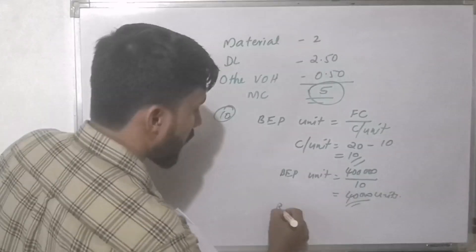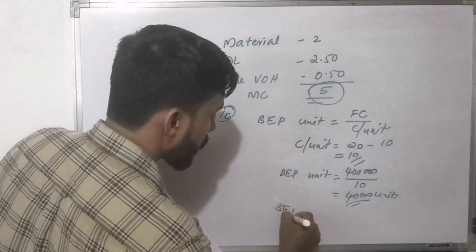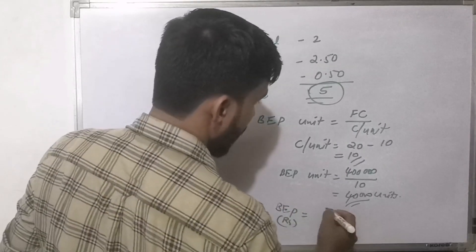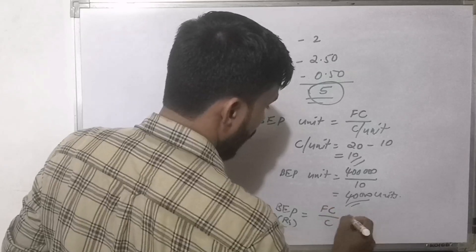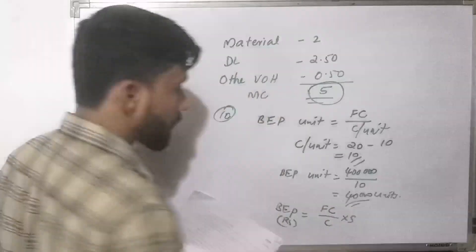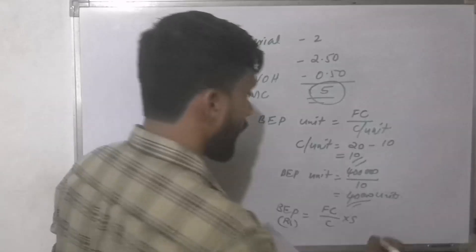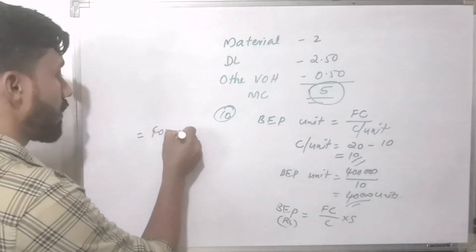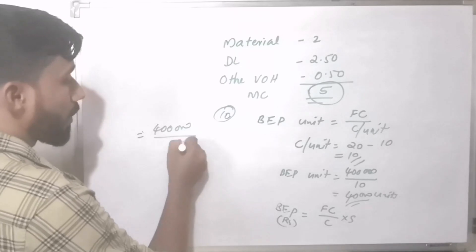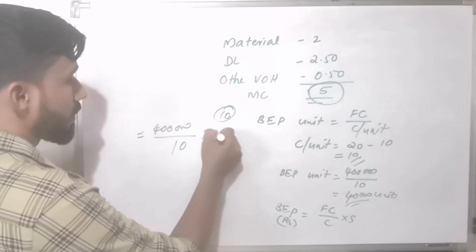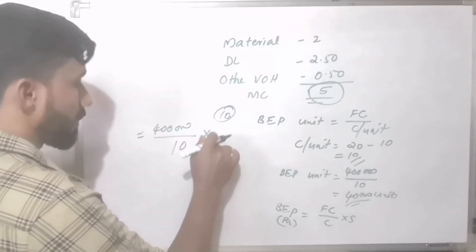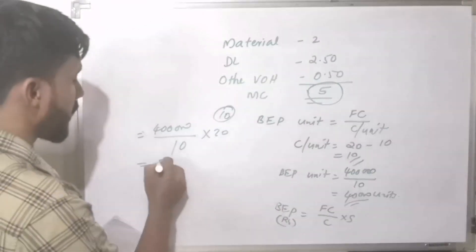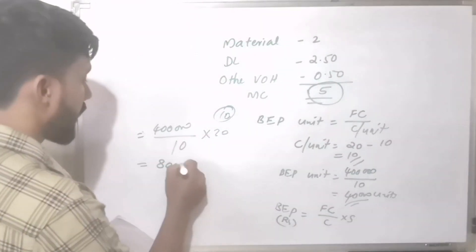BEP in rupees equals Fixed Cost divided by Contribution multiplied by Sales. Fixed cost is Rs. 4,00,000 divided by contribution Rs. 10, multiplied by selling price Rs. 20. BEP in rupees equals Rs. 8,00,000.